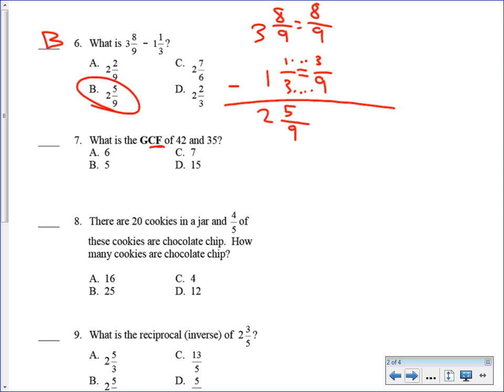GCF. F stands for factor. Most of you did this in your head if you remembered that it was a factor and not a multiple. 7 times 6 is 42, and 7 times 5 is 35. There's my GCF. There isn't any bigger number. 6 doesn't go into 35, 5 doesn't go into 42, and 15 doesn't go into either one of them. The answer is 7.